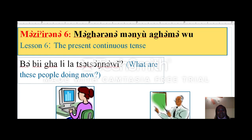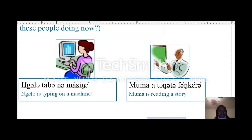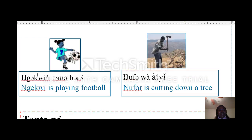Let's read. Galo is typing on a machine. Muma is reading a story. Gekwe is playing football.